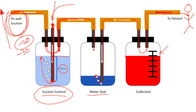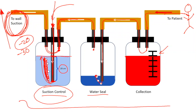Just a note: if you turn up the suction so much that you have a vigorous amount of bubbles coming up from the suction control pipe, it's going to evaporate the water faster, which is not something you want. You want a steady stream of bubbles that tells you suction is somewhat over negative 20 centimeters of water, but not that much over. This is the basic three-chamber container.